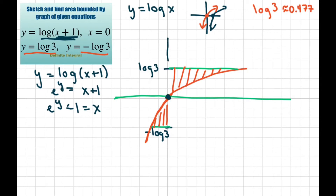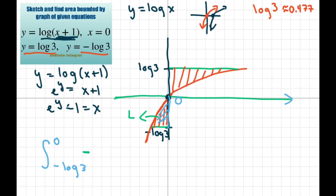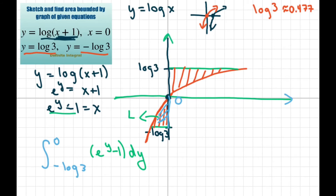We're going to look at our y-axis. For this area — this part here — I'm going to integrate from negative log of 3 to 0. This area is totally different than this one. Since it's to the left, it's going to be negative, and then you write negative x dy. Our x is going to be e to the power of y minus 1 dy.